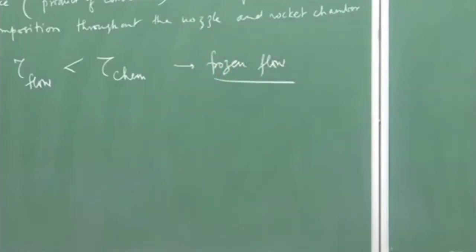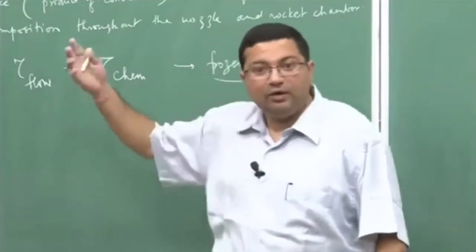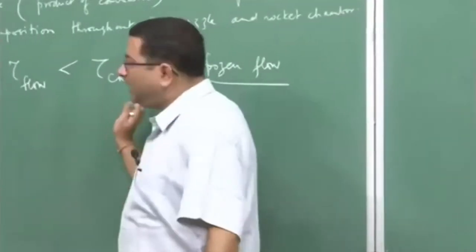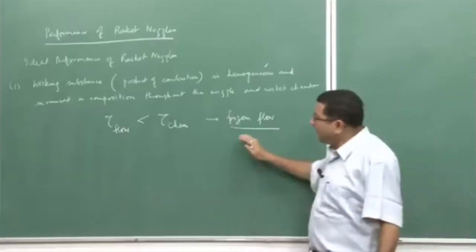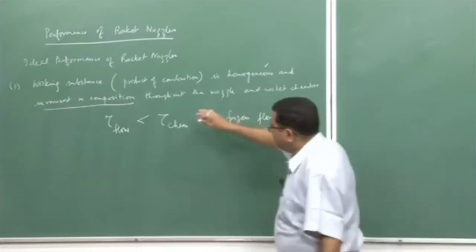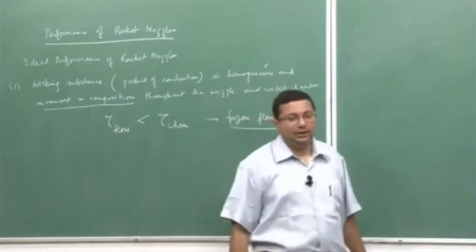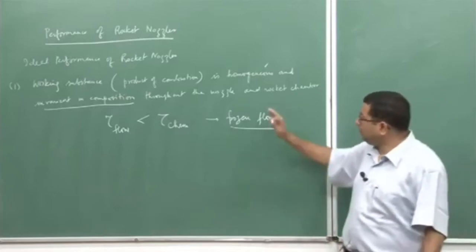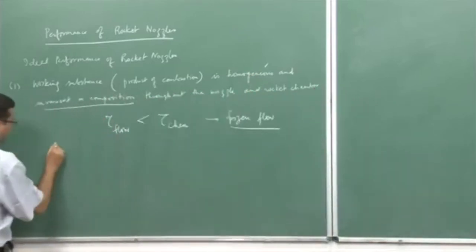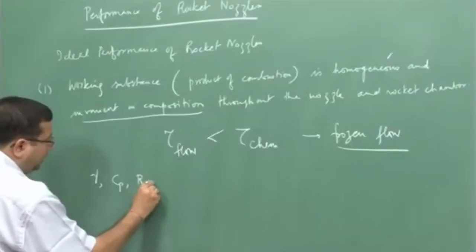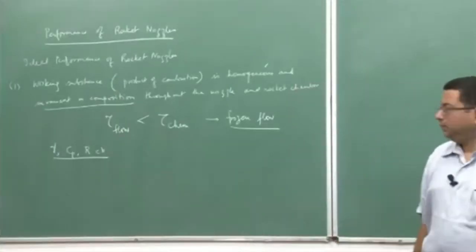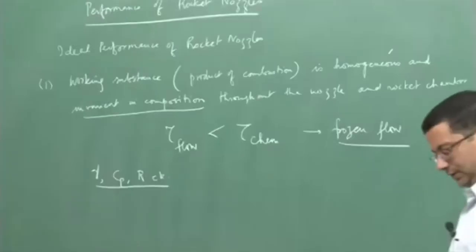Typically, these are the conditions that prevail in rocket nozzles because the flow velocity is supersonic. So we usually have frozen flow in the rocket nozzle, and we can assume the composition is invariant. Therefore, these two sub-assumptions — homogeneous and invariant — are quite valid for rockets. The consequence is that we get constant values of gamma, Cp, and R throughout the rocket.